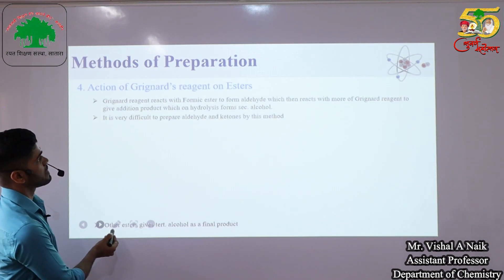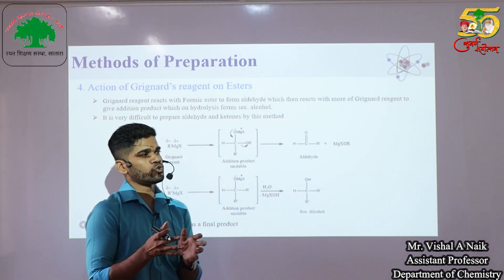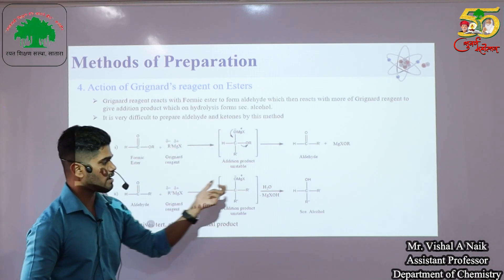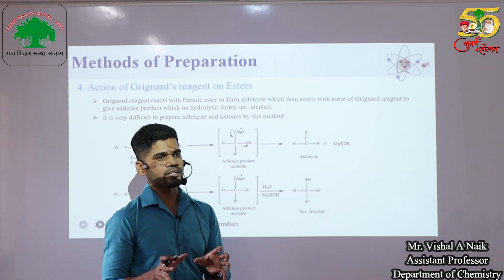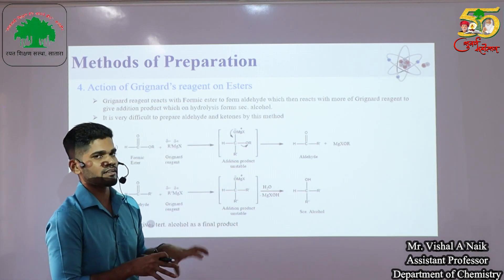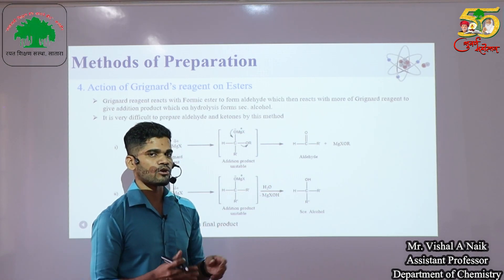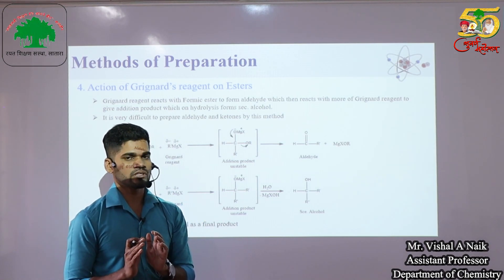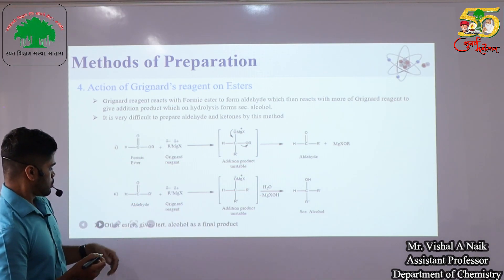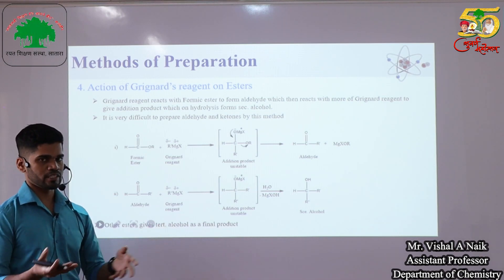The next method is the action of Grignard reagent on esters. Grignard reagent reacts with an ester to give an aldehyde or ketone as an intermediate, but that aldehyde again reacts with another mole of Grignard reagent to give a secondary alcohol. The reaction is uncontrolled, so it cannot be reliably used for preparation of pure aldehydes or ketones. Formic ester gives an aldehyde that converts to secondary alcohol; other esters give tertiary alcohols.